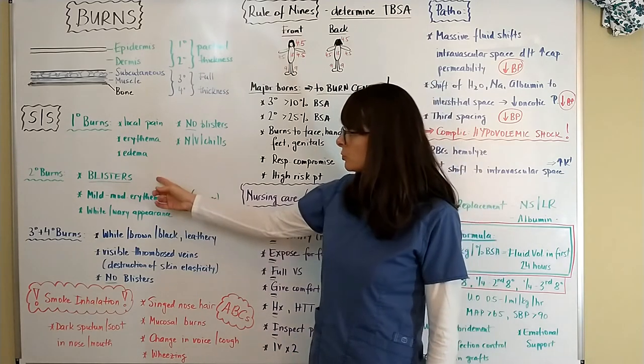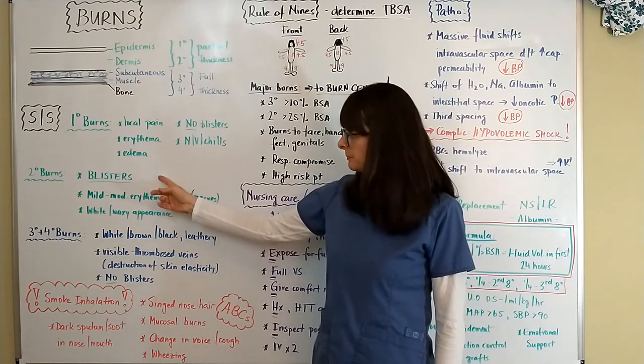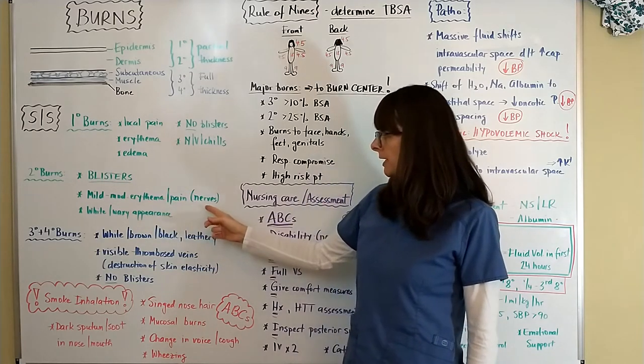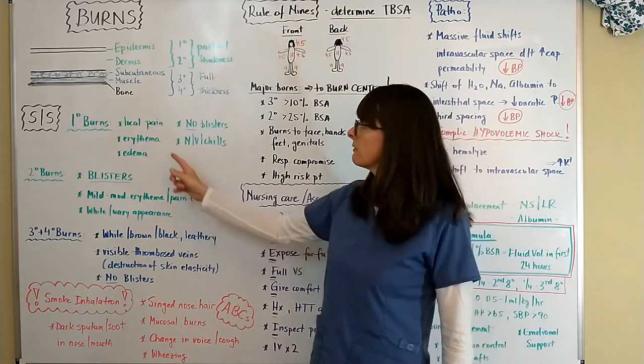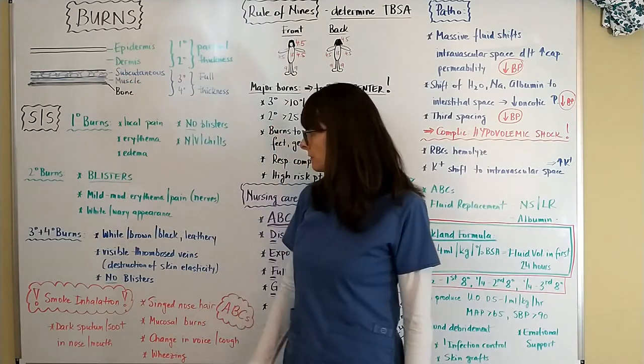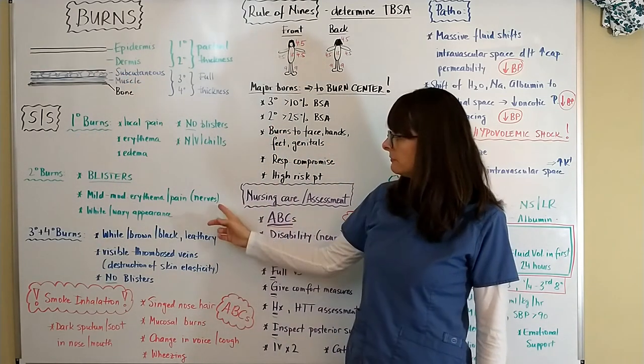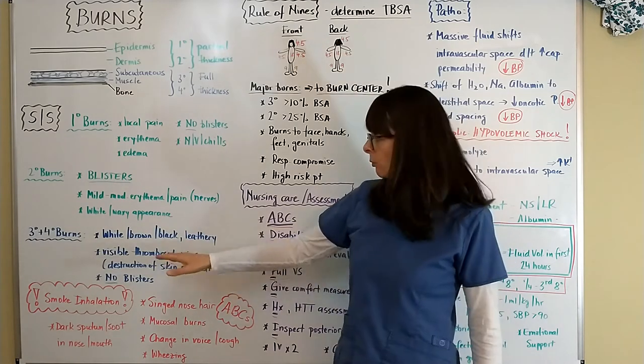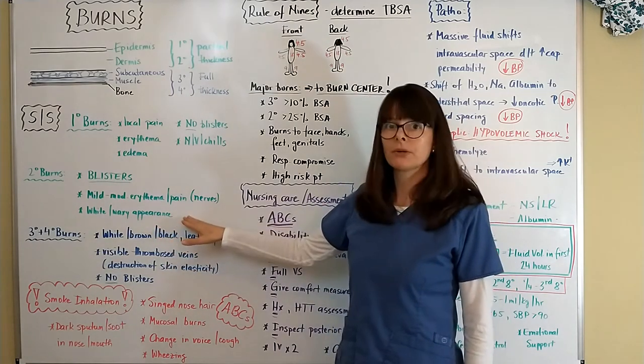Second degree burns are usually characterized by blisters and mild to moderate erythema and pain because now we have nerves involved in the second layer of the dermis. If these blisters rupture then underneath we might see this kind of a white and waxy appearance.